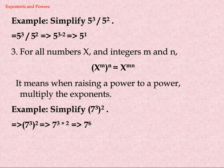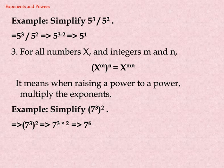Law 3: For all numbers x and integers m and n, (x^m)^n = x^(m×n). It means when raising a power to a power, multiply the exponents. Example: simplify 7 power 3 squared. (7^3)^2 = 7^(3×2) = 7^6.